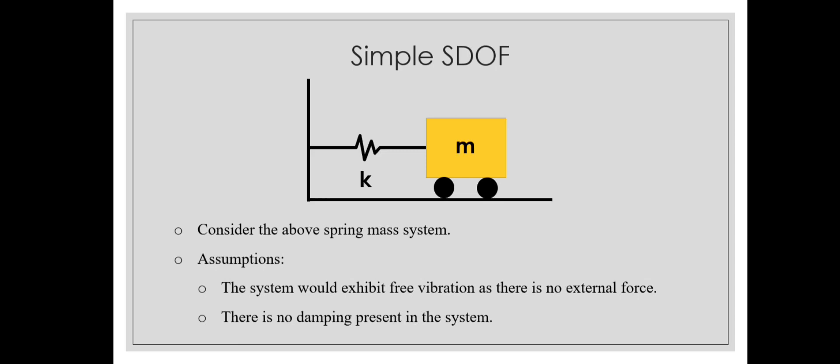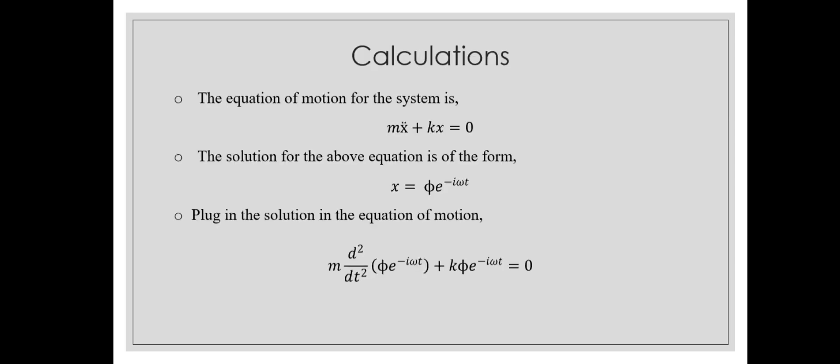In this system, I have a mass m connected to a spring of stiffness k. The system exhibits free vibration — I'll give an initial excitation and leave it. There is no external force and no damping. Drawing the free body diagram and deriving the equation of motion gives: mx double dot plus kx equals zero, where m is mass, k is stiffness, x is displacement, and x double dot is acceleration. This is an ordinary differential equation of the second order. The solution is of the form x equals phi times e to the power of minus i omega t.